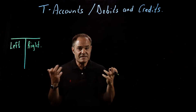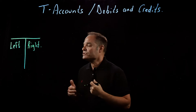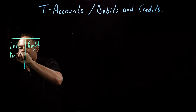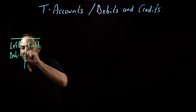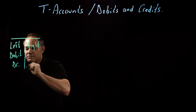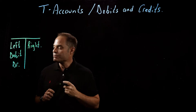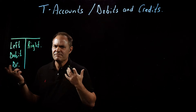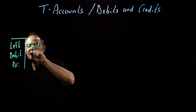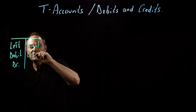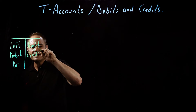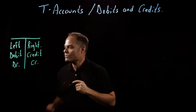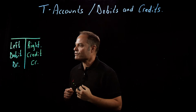But they also have different names. In accounting, we refer to the left side as the debit side, which we often abbreviate as DR, which is Latin for something. On the right side, we call that the credit side, which is abbreviated CR, which is nothing more than short form for credit.